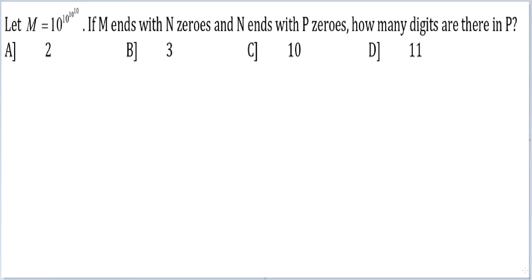Let's look at this question. Let m be equal to 10 raised to the power 10 raised to the power 10 raised to the power 10. If m ends with n zeros and n ends with p zeros, how many digits are there in p?